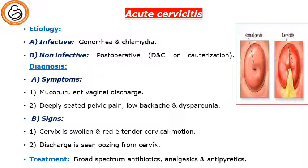The symptoms are mucopurulent vaginal discharge with deeply seated pelvic pain, low backache, and dyspareunia. The signs are the cervix is swollen and red with tender cervical motion, and there is a mucopurulent discharge coming from the cervix.